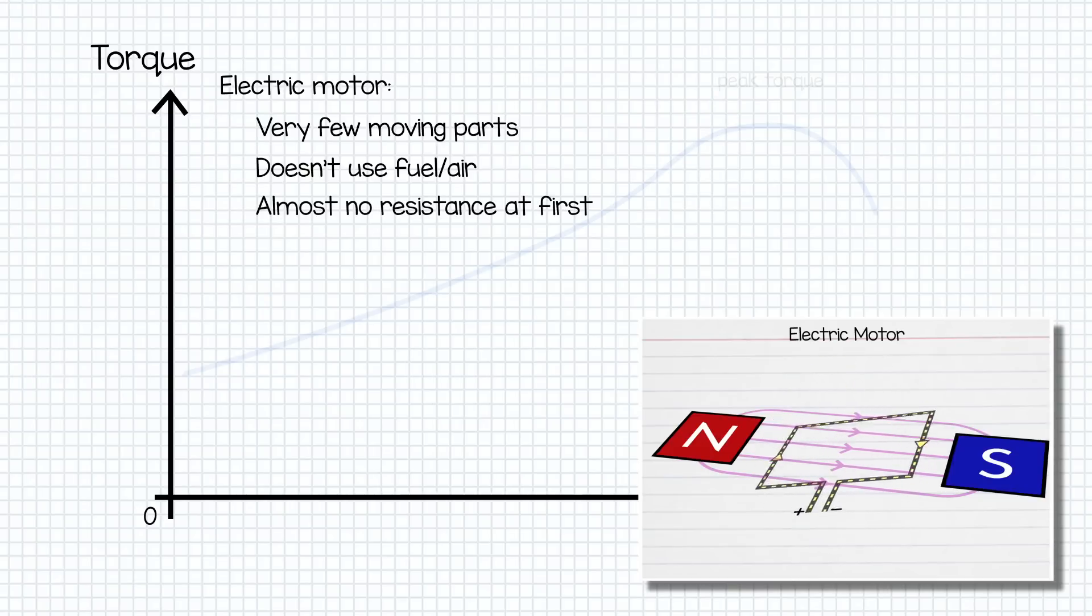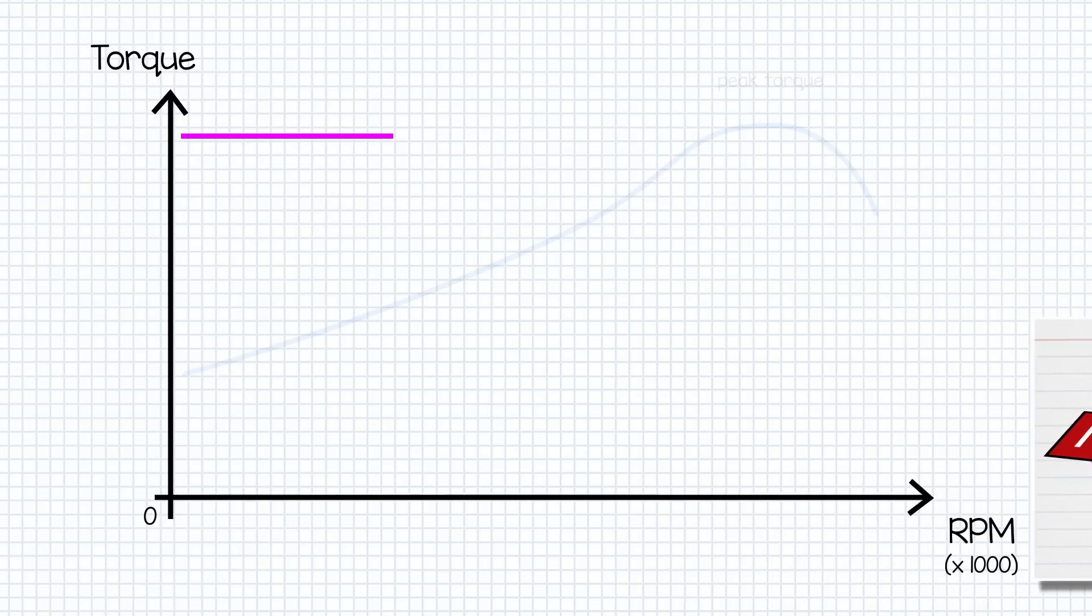So, there's next to no resistance on this motor, so the instant you put your foot down, you'll pretty much jump straight to maximum torque. And the torque curve looks like this, showing that max torque is delivered from the very beginning.